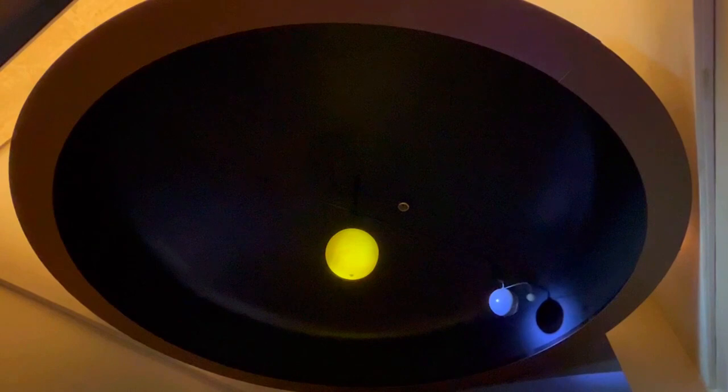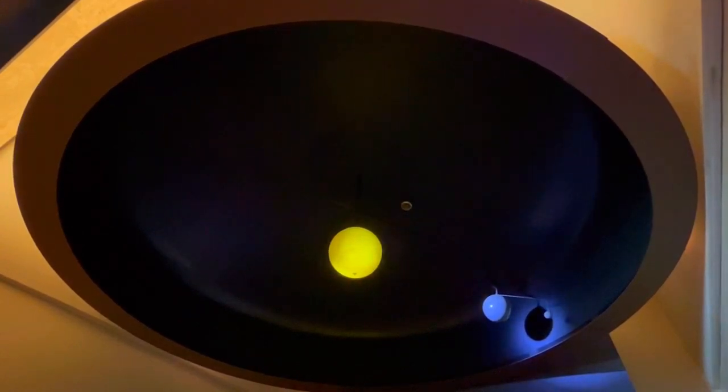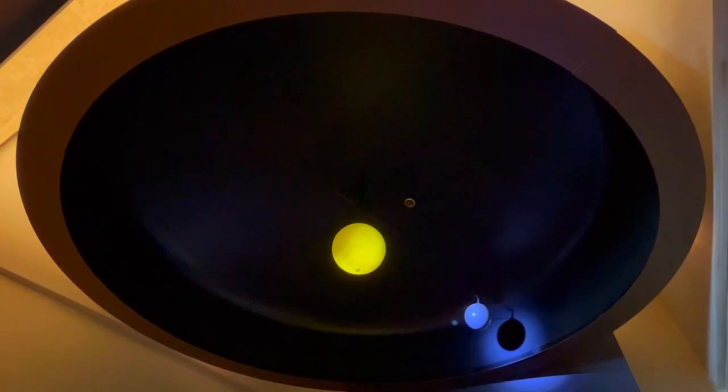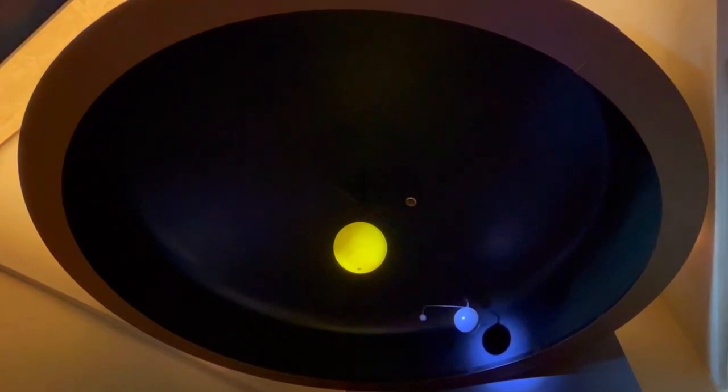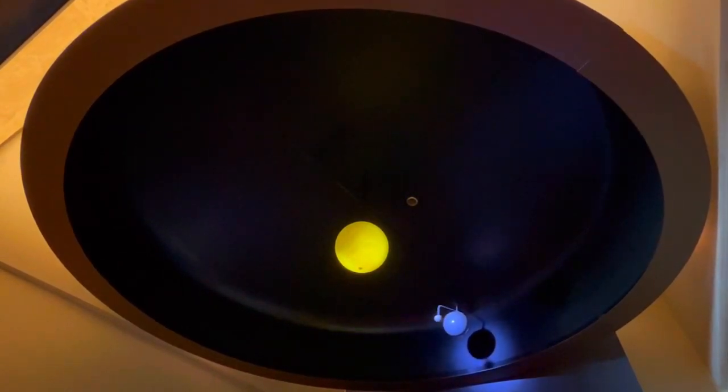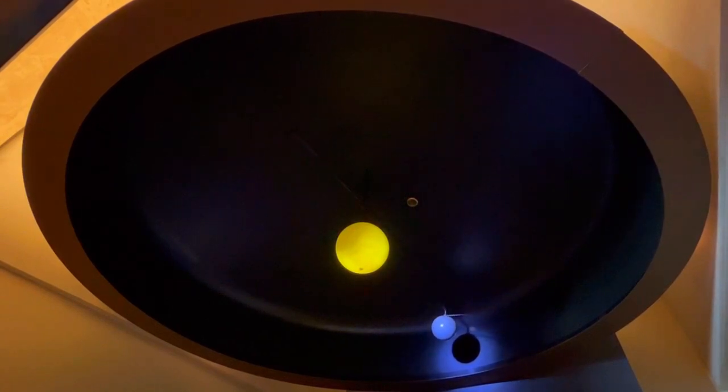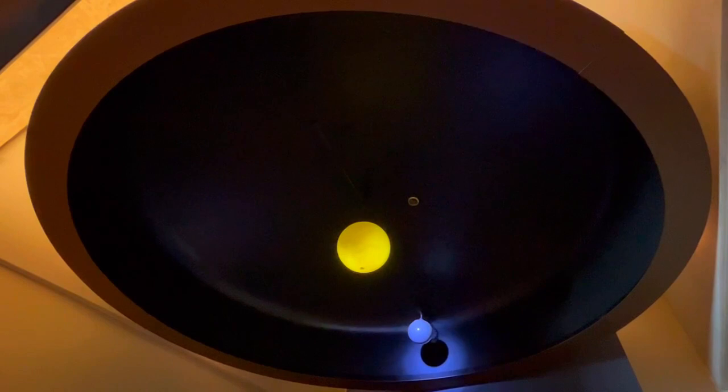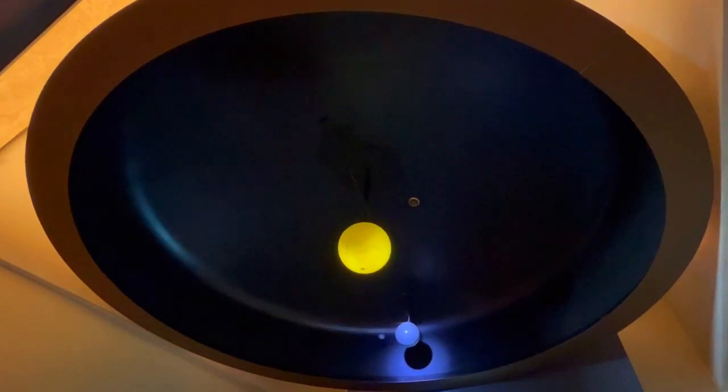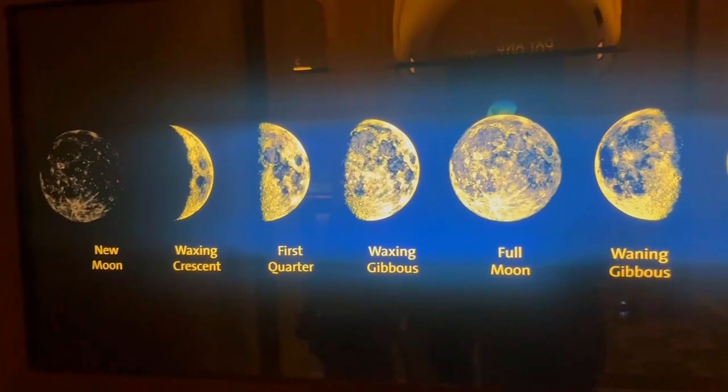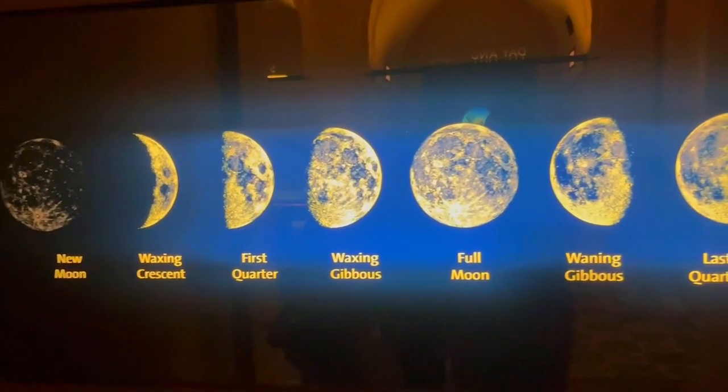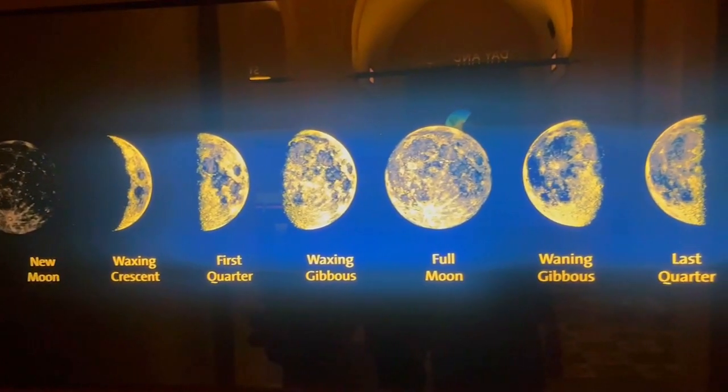Three key things determine what the moon looks like during its monthly cycle: how fast it spins, how it moves around our planet, and how much of its surface the sun lights up. The moon does one full spin on its axis while orbiting Earth, and this takes about 27.3 days. This means we always see the same side of the moon from our earthly view.